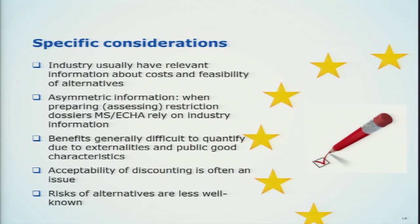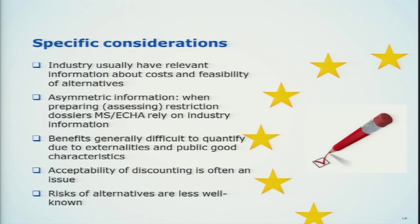Some specific considerations: industry usually has relevant information about cost and the feasibility of alternatives, but there is an asymmetry in information availability — member states preparing restriction proposals have to rely heavily on data they can get from industry, and it's not always easy to collect that data. Generally, benefits are difficult to quantify due to externalities and public good characteristics — we don't have market prices. As one very challenging example: PBT compounds — what is the value of avoiding a persistent pollutant accumulating in the arctic environment? The acceptability of discounting can also be an issue, and the risk profile of alternatives may be less well known.